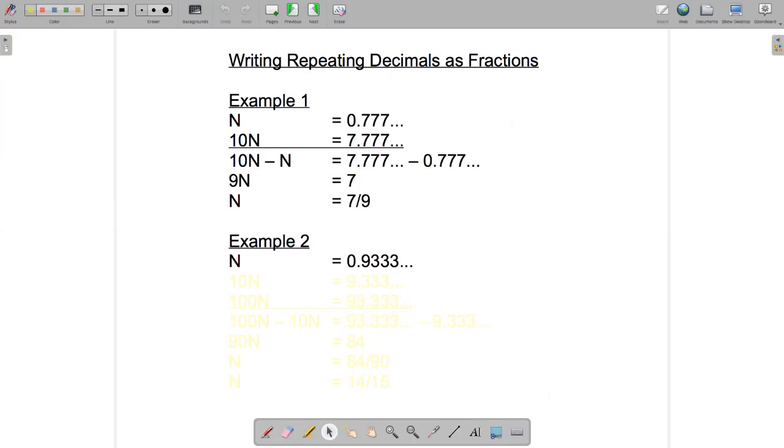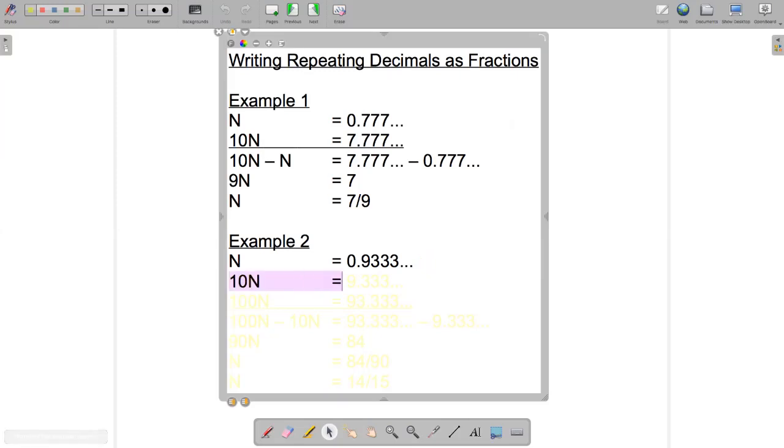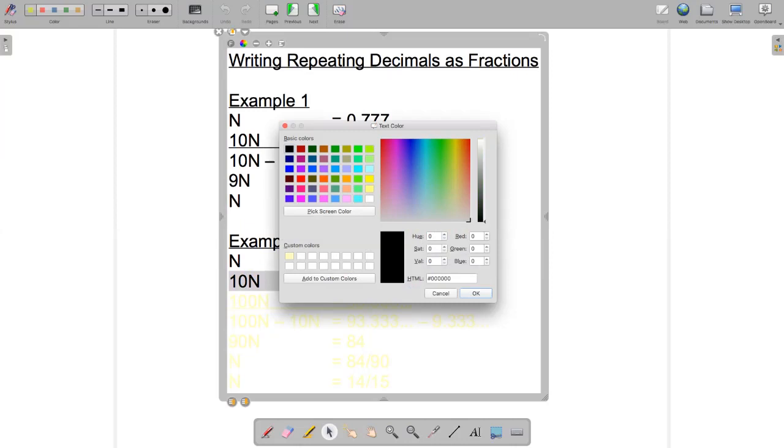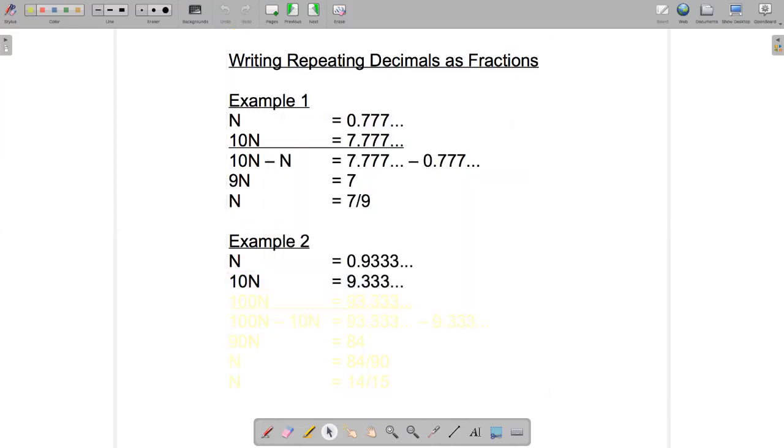Okay let's do a slightly more challenging example. n equals 0.93333 repeating. Okay let's try the same thing we did in the last example. Let's multiply by 10 and see where that gets us. Okay so now we have 9.333 repeating.